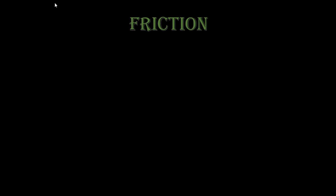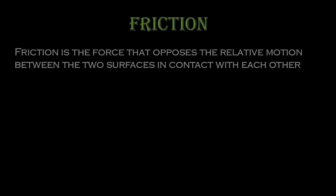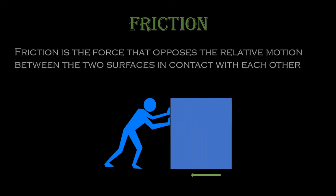The new topic is friction. Friction is a force that opposes the relative motion between two surfaces in contact with each other. It is a contact force, meaning it requires contact with something. So when this box is in contact with the surface of the floor, friction is generated — it is because of two bodies coming in contact with one another.